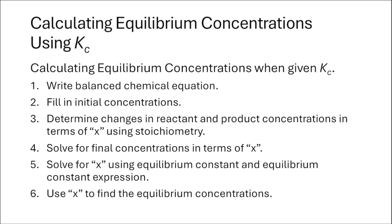We're going to start by writing a balanced chemical equation, filling in our initial concentrations, and then considering how those initial concentrations are going to change as the reaction proceeds to reach equilibrium, and then we'll solve for our final concentrations of our reactants and products. To do this we're going to consider the changes in concentration in terms of x using the stoichiometry of the reaction, and then solve for x to determine those equilibrium concentrations.